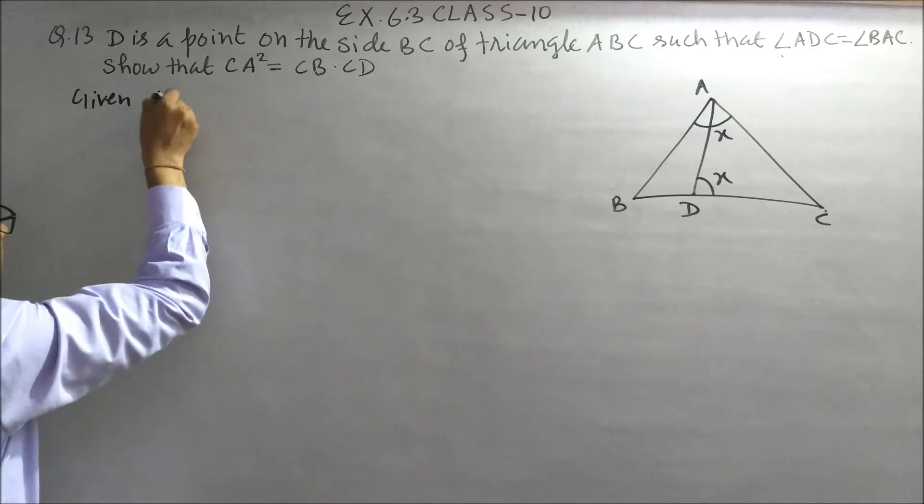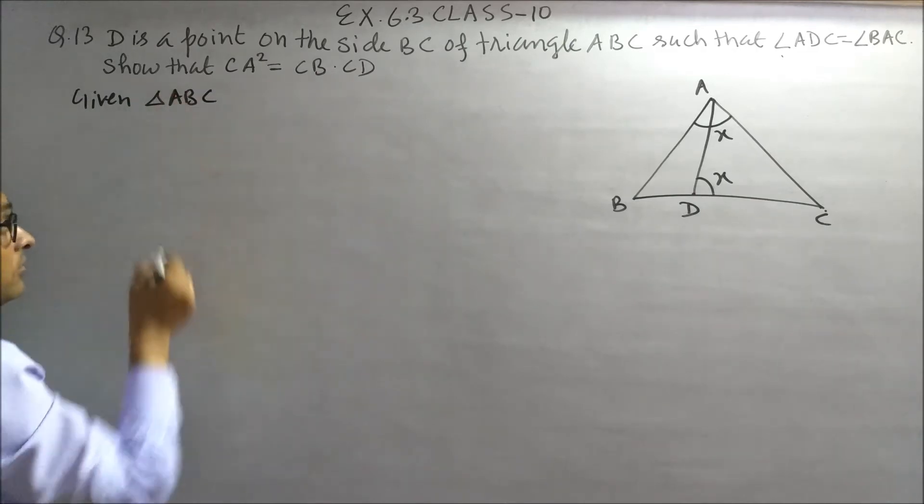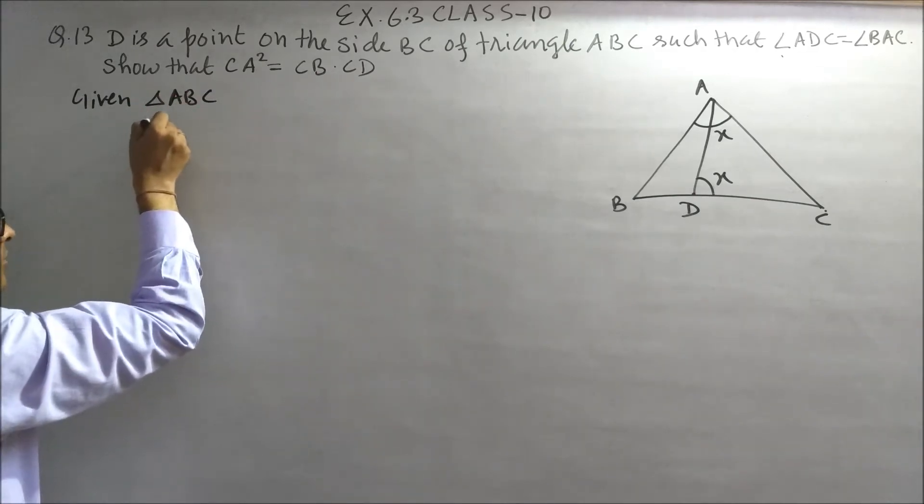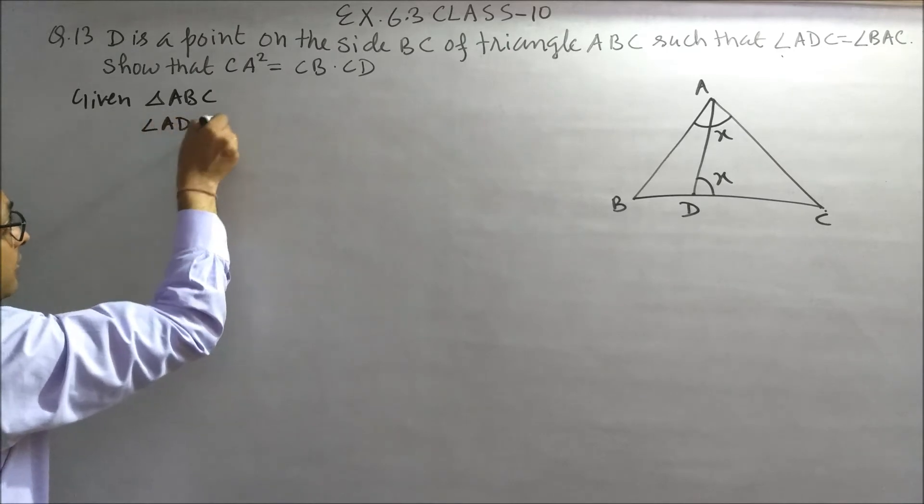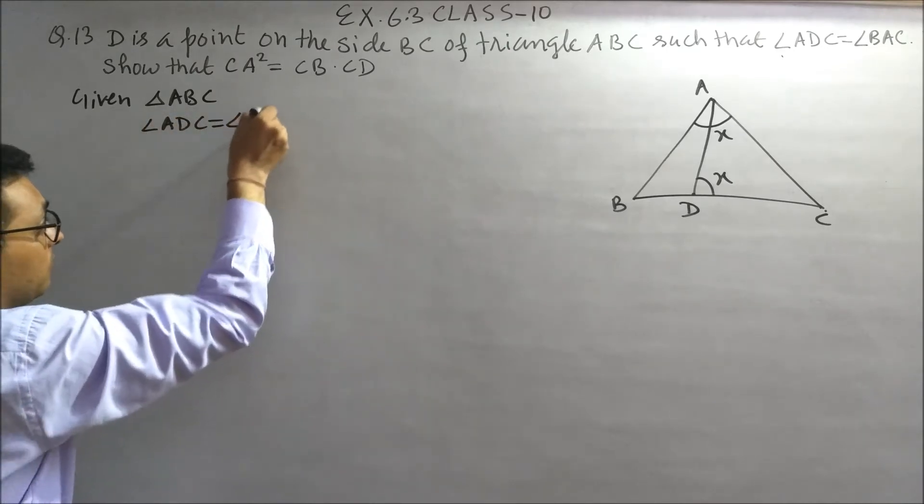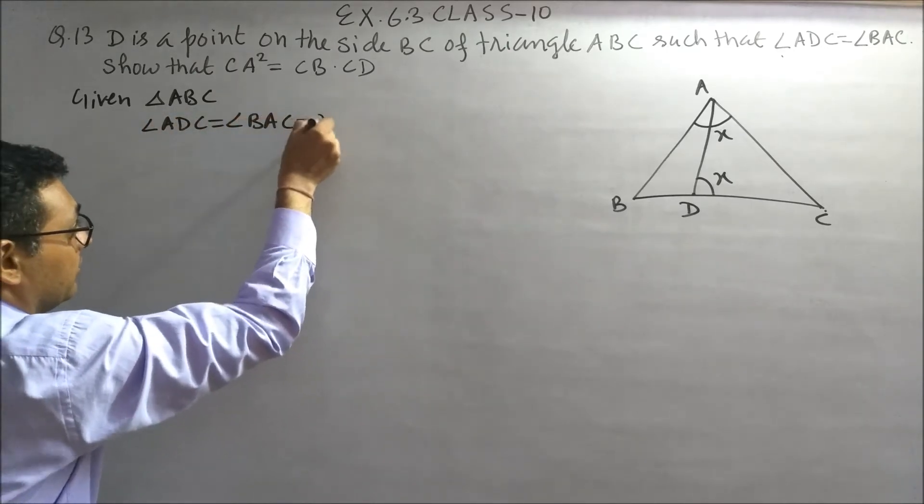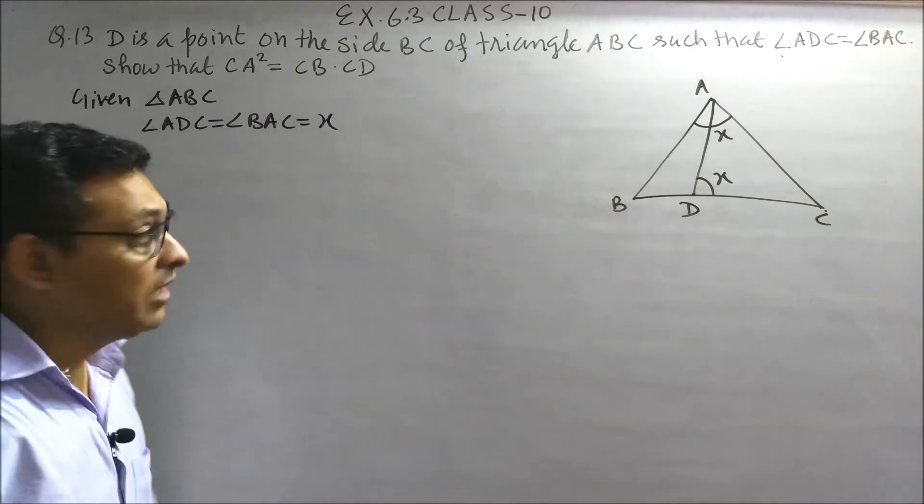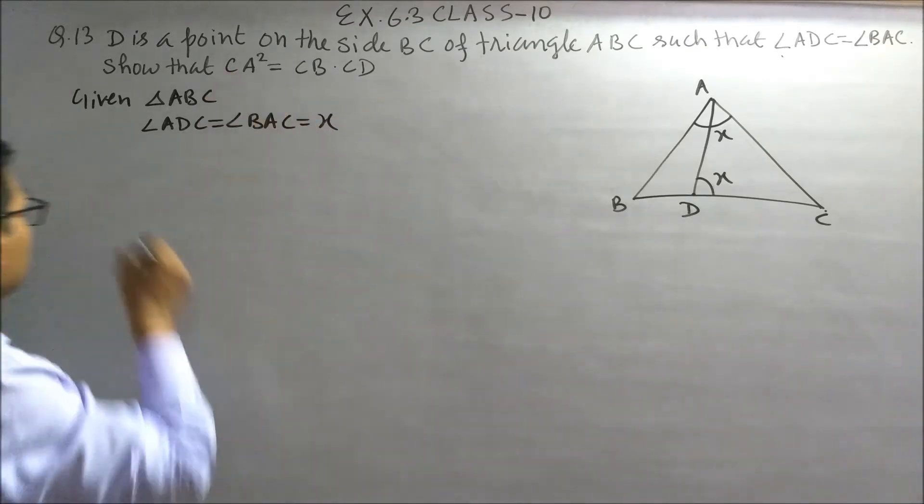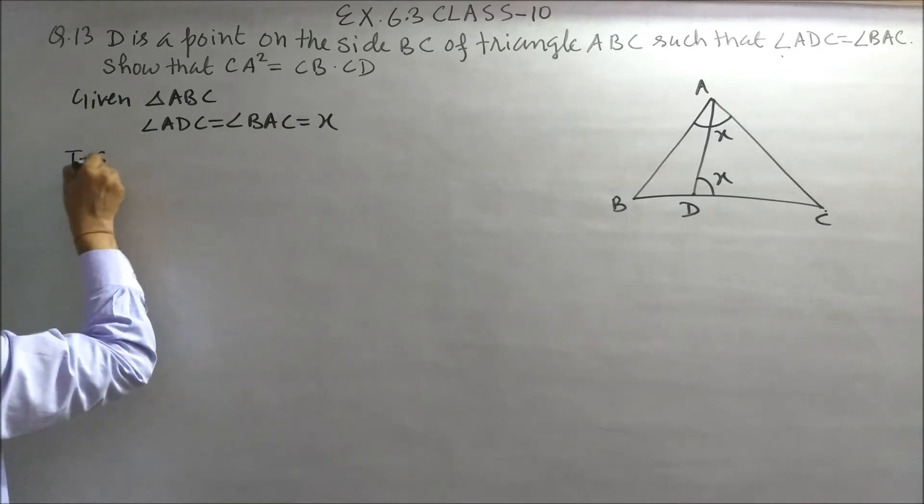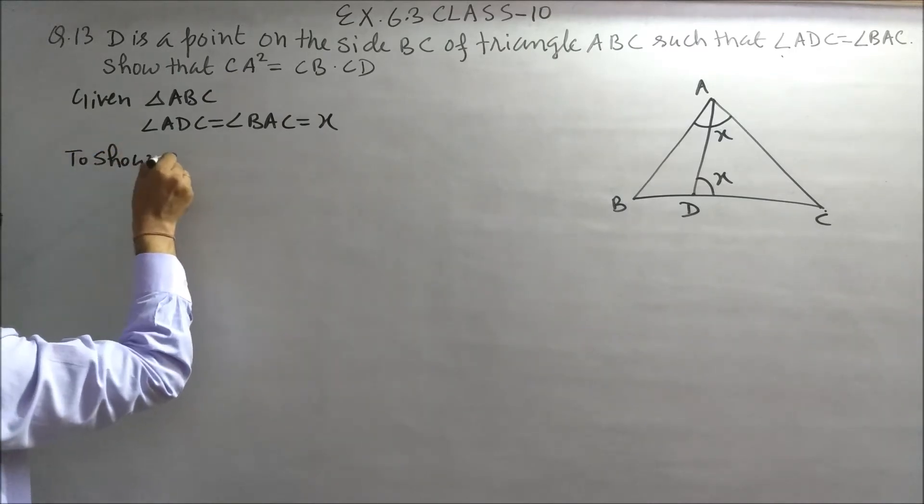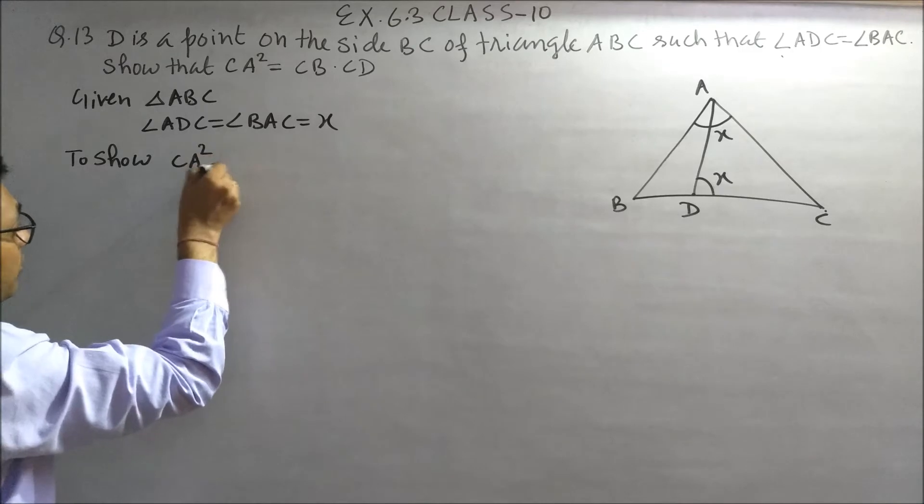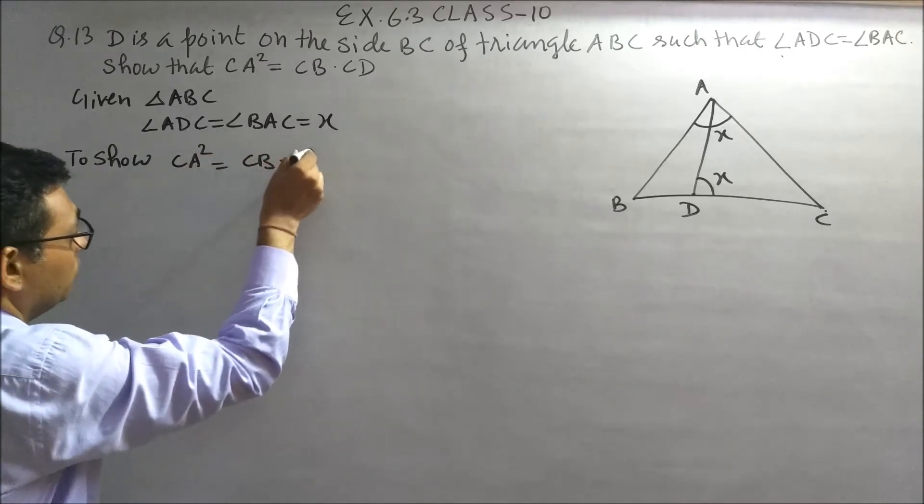Given triangle ABC, angle ADC is equals to angle BAC. Let's say these are equals to X. Then we have to show that CA square is equals to CB into CD.